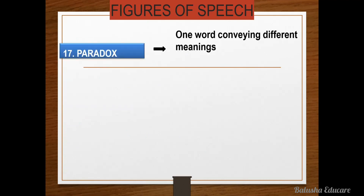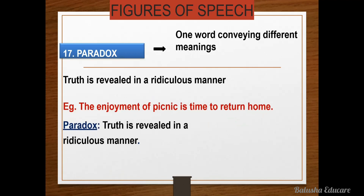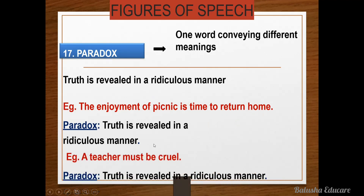The next figure of speech is paradox — truth is revealed in a ridiculous manner. Truth is stated, but it is conveyed in a different or ridiculous way. For example, 'The enjoyment of picnic is time to return home' — paradox figure of speech, truth is revealed in a ridiculous manner. You enjoyed, but it's time to return home. Another example: 'Look at the teacher, must be cruel' — paradox, truth is revealed in a ridiculous manner.